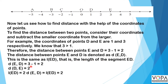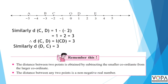Distance of ED equals three minus one equals two, so the length of ED equals two. Similarly, for CD: the coordinate of C is minus two and of D is one. Since one is greater than minus two, one minus minus two equals one plus two equals three. Therefore, distance of CD equals length of CD equals three. Remember: the distance between two points is always a non-negative real number.